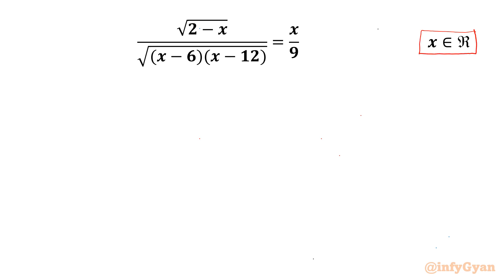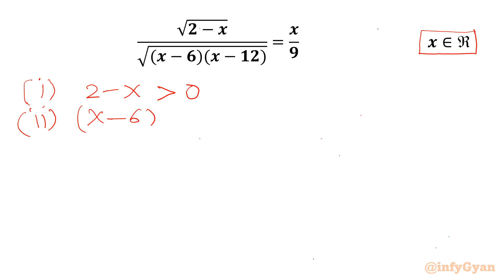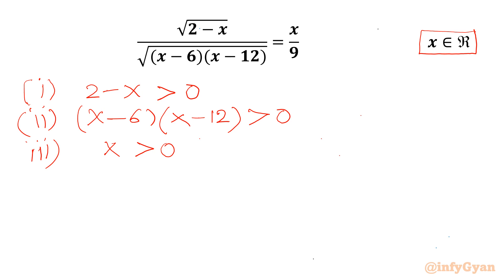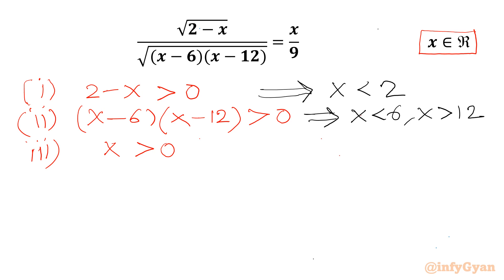Let's get started by writing conditions on x for the solution to be real. First condition from the LHS numerator: (2 minus x) should be greater than 0. Second condition from the denominator of LHS: (x minus 6)(x minus 12) should be greater than 0. Third condition from the RHS: x should be greater than 0. Condition 1 gives x less than 2. Condition 2 gives x less than 6 or x greater than 12. Condition 3 gives x greater than 0.